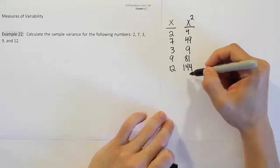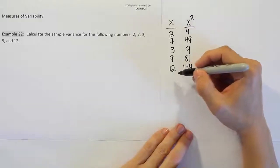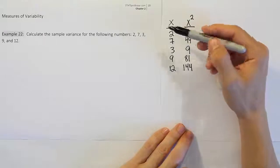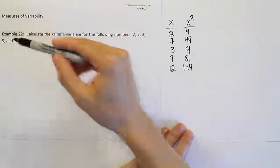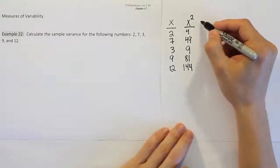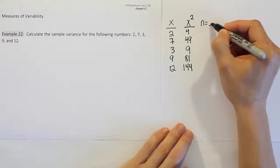And once you have those listed, the next step of the process is going to be to simply count up how many data values you started with. So we have 1, 2, 3, 4, 5 data values. We're going to call that quantity n. So n is 5.